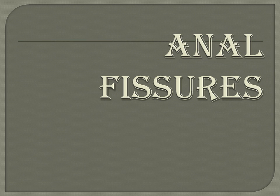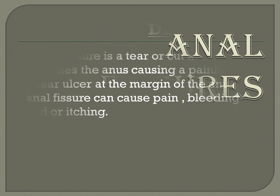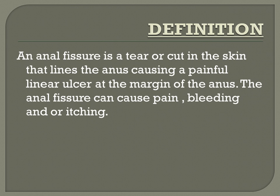First, we will see what are anal fissures. An anal fissure is a tear or cut in the skin that lines the anus, causing a painful linear ulcer at the margin of the anus. The anal fissure can cause pain, bleeding, and itching. The fissure is nothing but a cut or tear in the margin of the anus.